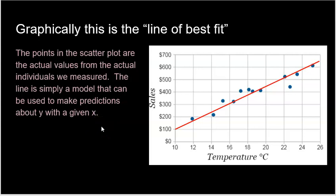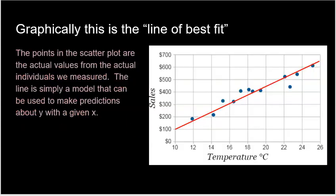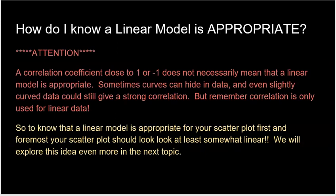This is what you've called the line of best fit before, but we're using a more mature statistical name: a linear regression model. The points in the scatterplot are the actual values from the actual individuals that are measured, and the line is simply a model used to make predictions about y with a given x. So how do I know a linear model is appropriate? This is super important. A correlation coefficient close to 1 or negative 1 does not simply mean that a linear model is appropriate, because curves can hide in data. We will explore this idea more in the next topic.